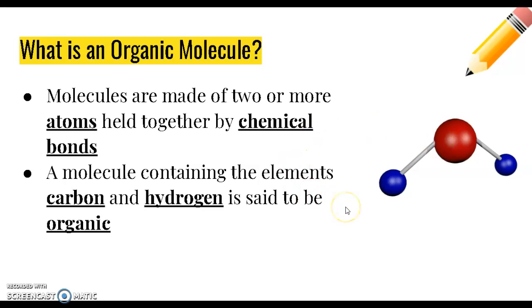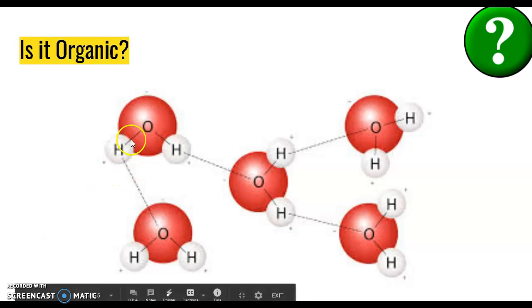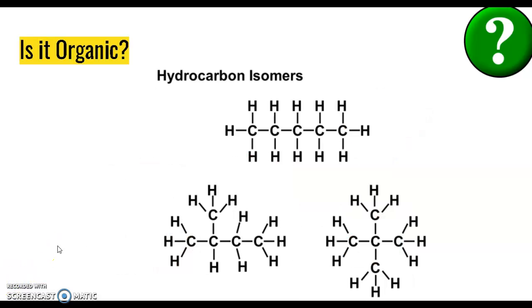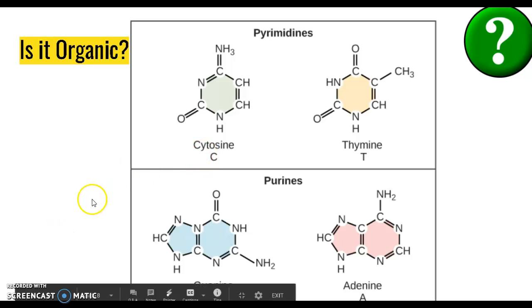If a molecule contains the two elements carbon and hydrogen, it is said to be organic. There's a whole discipline in chemistry called organic chemistry that focuses on molecules containing carbon and hydrogen. In the puzzle pop-up window, I want you to tell me if the following molecules are organic. First we have a water molecule made with two hydrogen atoms and one oxygen atom. Is water organic? Next we have some molecules called hydrocarbons. Do you think these are organic? And finally we have some molecules called pyrimidines and purines. Do you think these are organic?